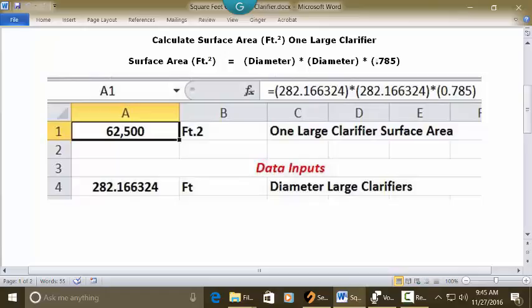Open parenthesis, 282.166324, close parenthesis, multiplication key, open parenthesis, 282.166324, close parenthesis, multiplication key, open parenthesis, 0.785, close parenthesis.